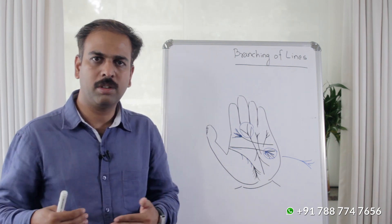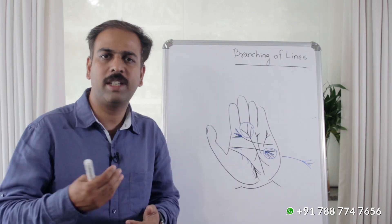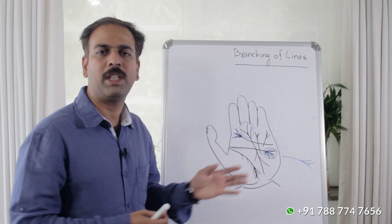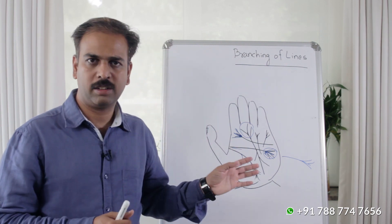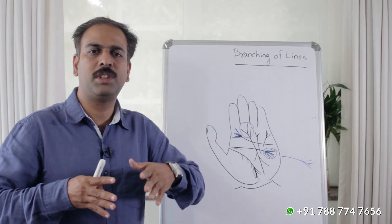due to which they become bed-ridden - we can see this type of sign in their hands. This is the sign that reduces the power of the life line.